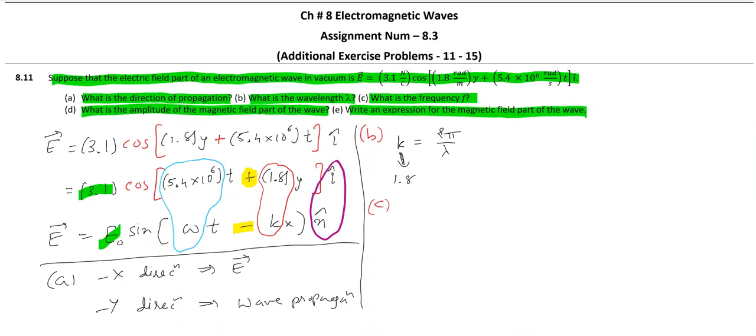What is frequency? Again, equally easy. Omega is equal to 2π f and we have omega given which is 5.4 into 10 raised to 6. Right?